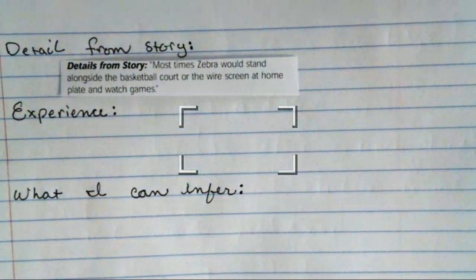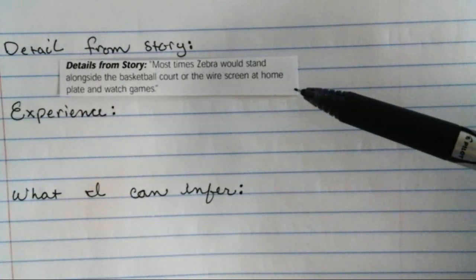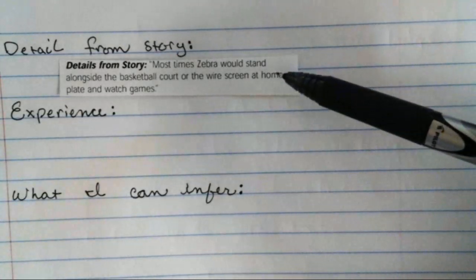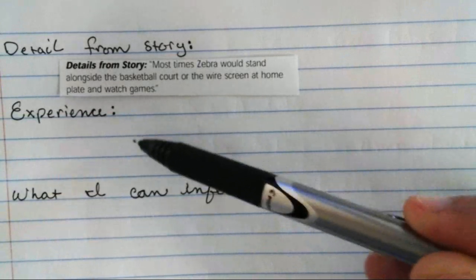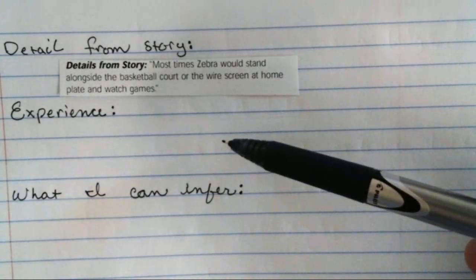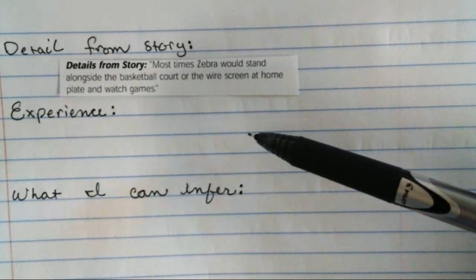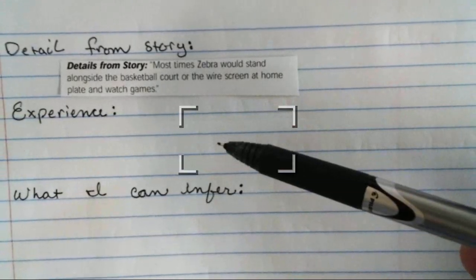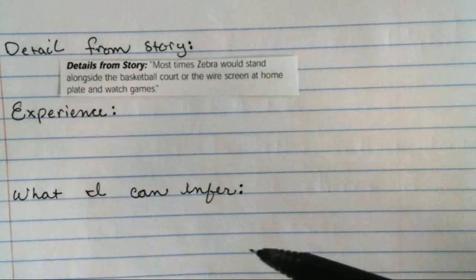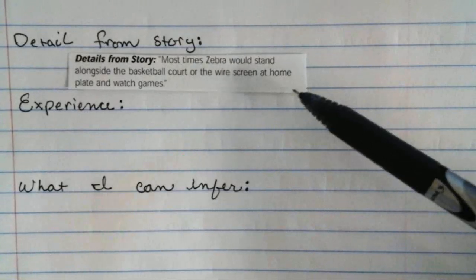Mr. Larson doesn't have to write it down. The first detail from the story is: 'Most times, Zebra would stand alongside the basketball court or the wire screen at home plate and watch games.' Copy that down. Then tell me your experience — why would you stand all by yourself by a basketball court or a wire screen, or have you seen people do that? Then tell me what you can infer about Zebra based on this detail.